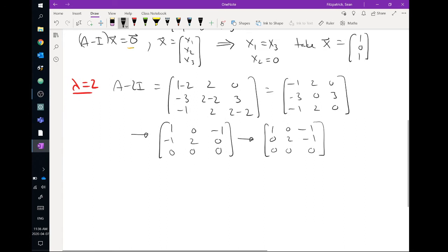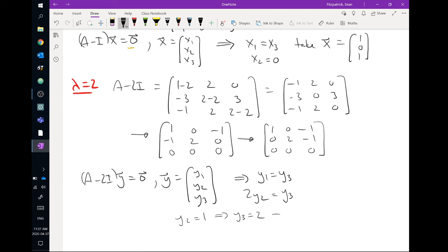But it's probably close enough as far as deciding what our vector should be. Because if we say that A minus 2I times y is equal to 0 and y is, let's say, y1, y2, y3. Well, then we get that y1 has to equal y3. Okay, and 2y2 has to equal y3. Okay, so what I might do is if I put y2 equal to 1, that says that y3 is equal to 2, and that means that y1 has to equal 2. And so that gives me a vector 2, 1, 2. Okay, for that second eigenvector.